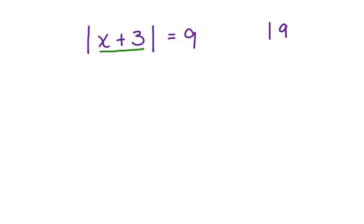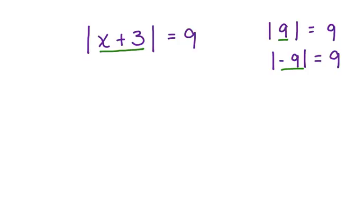So if we had this, it's equal to 9. But if we had this, it's also equal to 9, because the absolute value tells you how many units a number is from zero. So when we have an absolute value equation such as this one — the absolute value of x plus 3 equals 9 — we're going to break this out into two different equations.